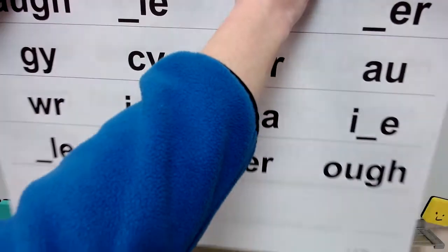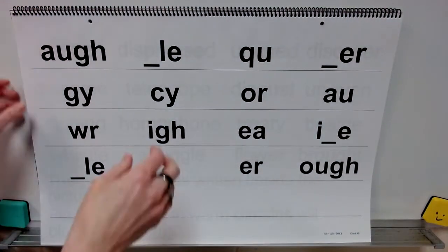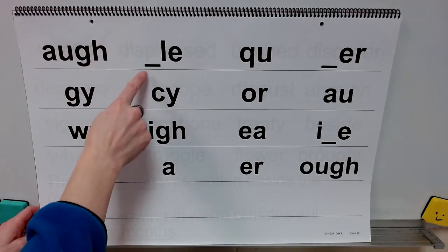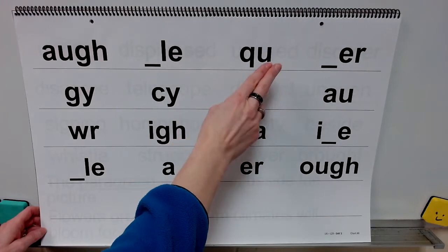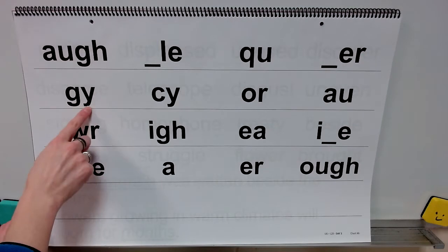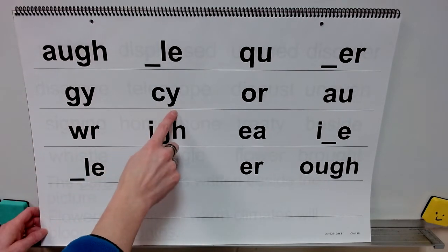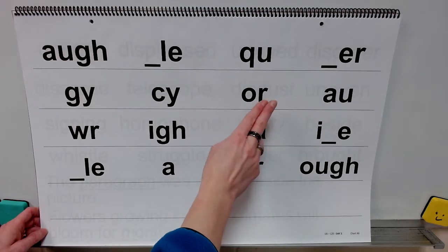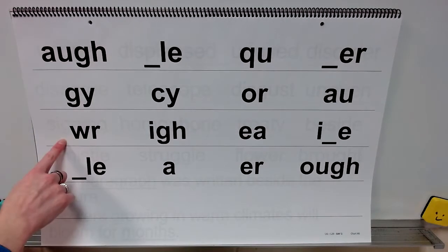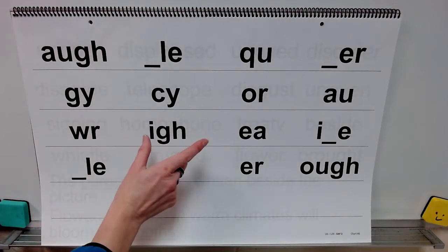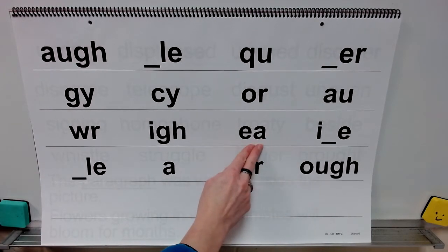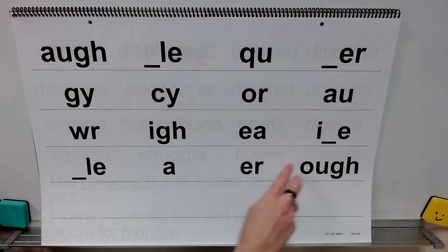Now you'll say the sound for some spellings. Get ready. Sound: aw. Sound: l. Sound: oo. Sound: er. When the Y is here, sound: j. When the Y is here, sound: s. Sound: or. Sound: aw. Sound: er. Sound: i. Long sound: e. Short sound: eh. Sound: i.